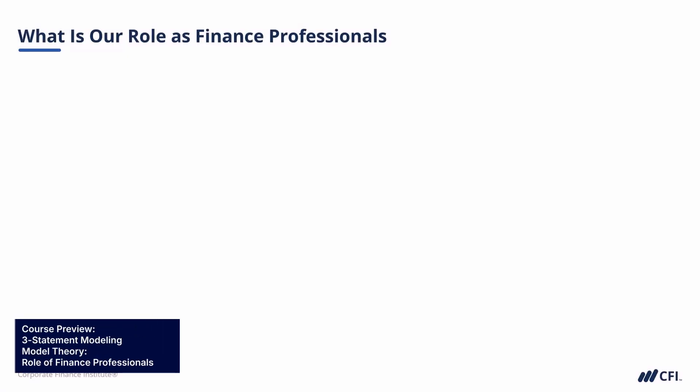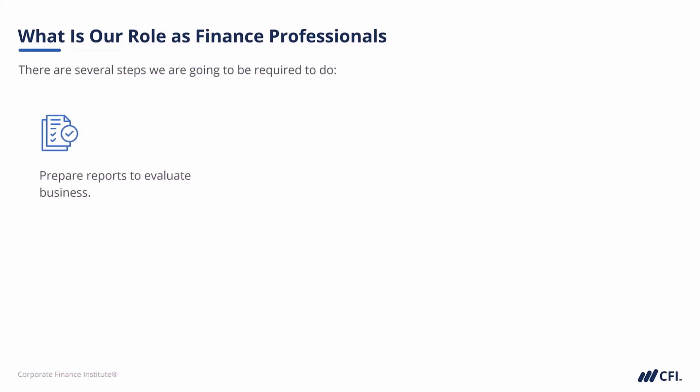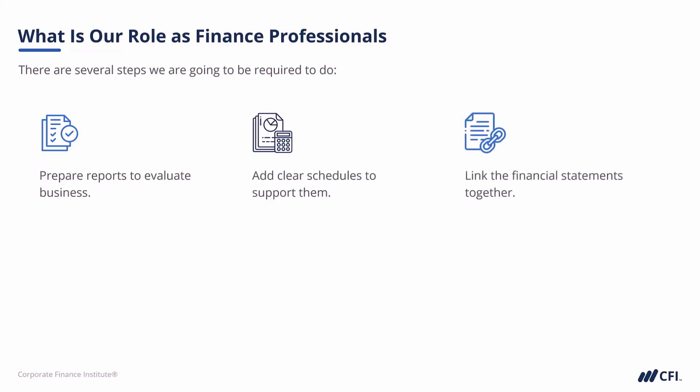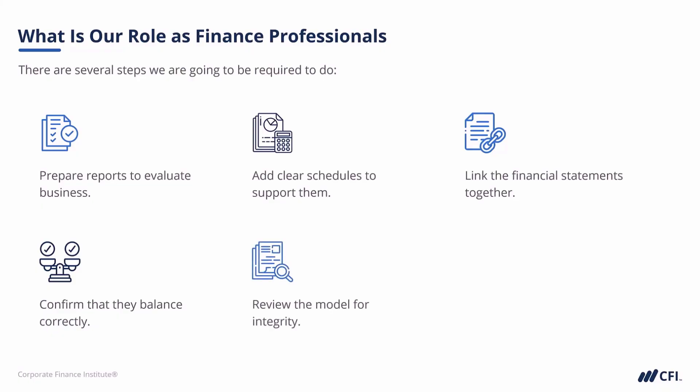Now that we've gone through a review of the financial statements and what they're really showing us, we need to think about our role as finance professionals. There will be a number of things that we're going to be required to do. First off, we're going to need to prepare reports that will help to evaluate the business. We'll need to add clear schedules that will support these reports. One of the critical things we'll need to complete is linking together the financial statements and confirming that they balance correctly. Being able to link and balance a financial model can be tricky, but we're going to have some great tips and guidance to help you get there. We absolutely have to review the model to make sure that it has integrity and there haven't been any errors placed in there along the way. We're also going to discuss setting up the model so it's presentable and prints properly — something which often gets overlooked in financial modeling, but is critically important for our stakeholders.